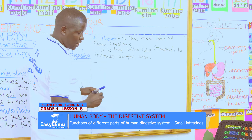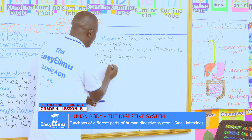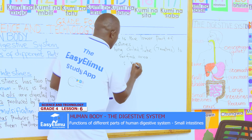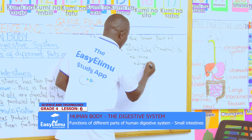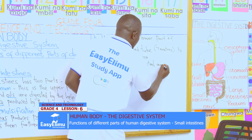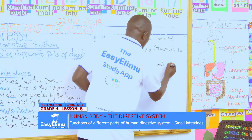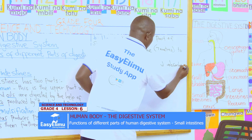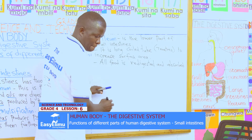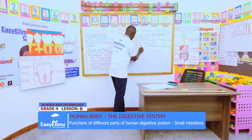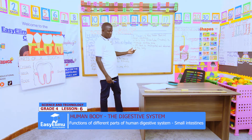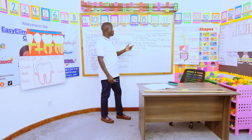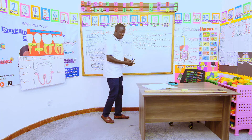All food is redigested in the ileum, and after it has been redigested it is absorbed into the body. So absorption of food takes place in the ileum.